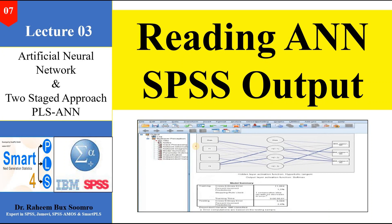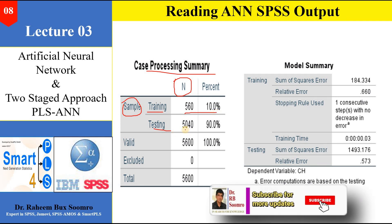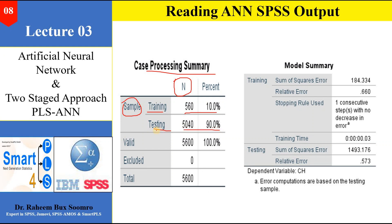Now we are going to understand the ANN output in SPSS. The first result is the case processing summary, where N refers to the sample size and percentage. We have categorized the sample into training and testing: 10% allocated to training (560) and 90% allocated to testing (5040). Combined, this is 5600, which is 100% — no excluded cases. The total sample size is 5600.